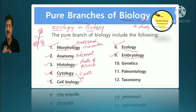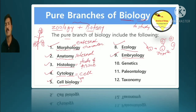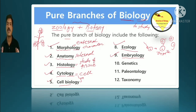In embryology, we study how from sperm and egg a zygote is formed, then from zygote an embryo. Fertilization produces the zygote, then cleavage occurs — 2 cells, 4, 8, 16, 32 — and the embryo develops step by step. We study every stage of development inside the womb over nine months.